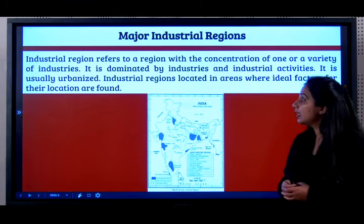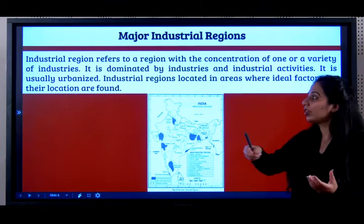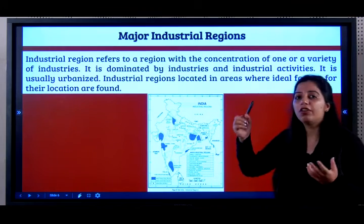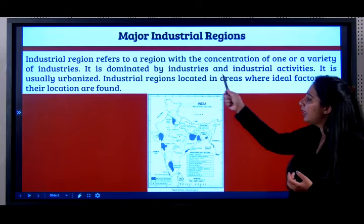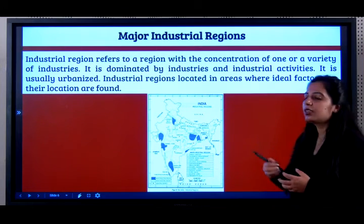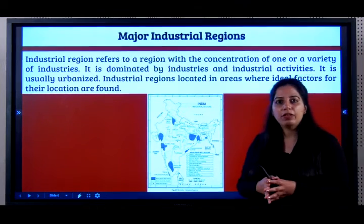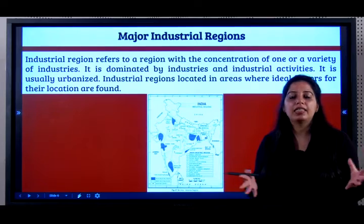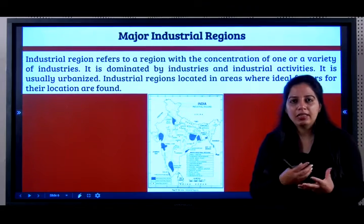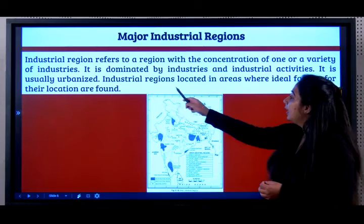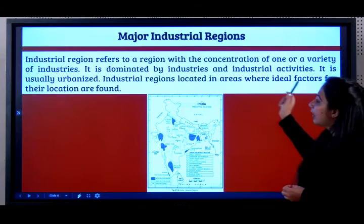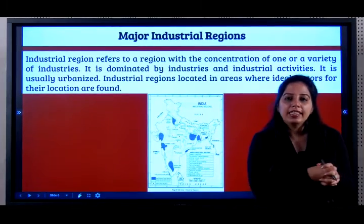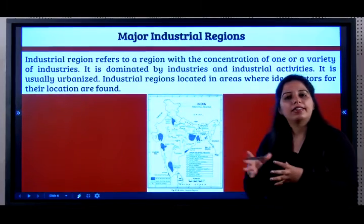What are the major industrial regions of India, and what is an industrial region? An industrial region refers to a region with a concentration of one or a variety of industries. It is dominated by industries and industrial activities and is mostly an urban area. For example, Bangalore is known as the IT capital of the world — Silicon Valley — where all knowledge-based IT companies are concentrated. Industrial regions are located where the ideal factors for their location are found.